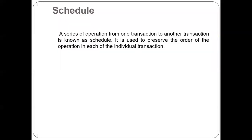Serial Legibility in DBMS. First, what is a schedule? A series of operations from one transaction to another transaction is known as a schedule. The order in which the operations of multiple transactions appear for execution is called a schedule. It is used to preserve the order of operations in which individual transactions occur.